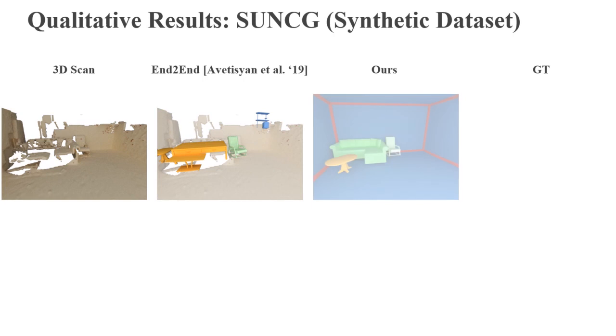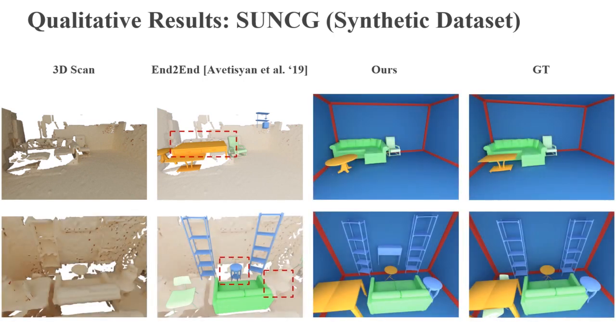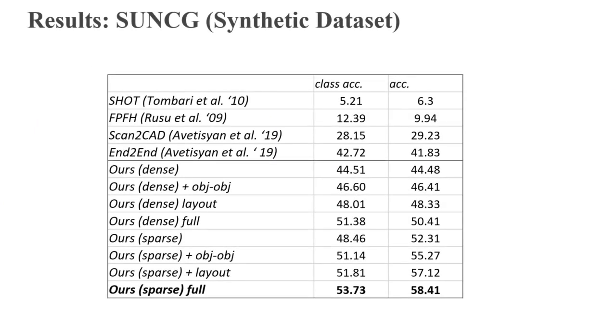Here, we show prediction results on a synthetic dataset. Our method produces more consistent CAD alignments as well as 3D layout. On synthetic data, we outperform state-of-the-art by 16.6% on CAD model alignment.